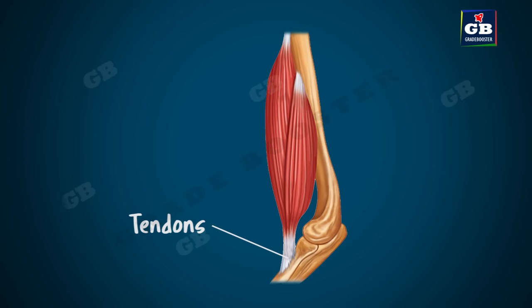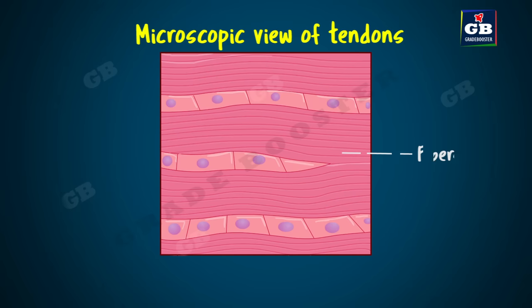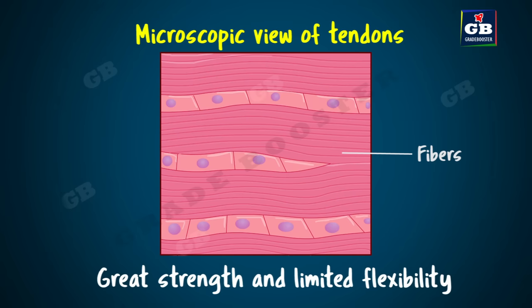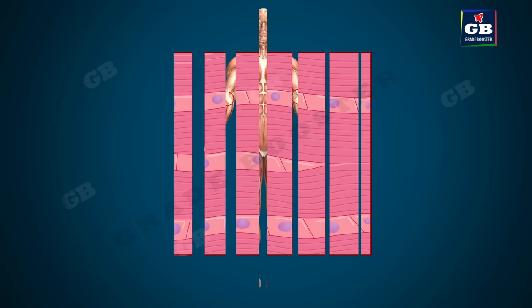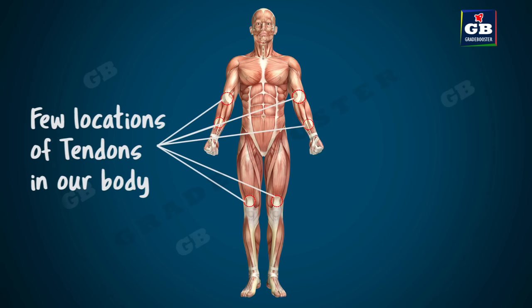Tendon is a kind of connective tissue that connects muscle to a bone. The matrix of tendon has many fibers. It has great strength and limited flexibility.